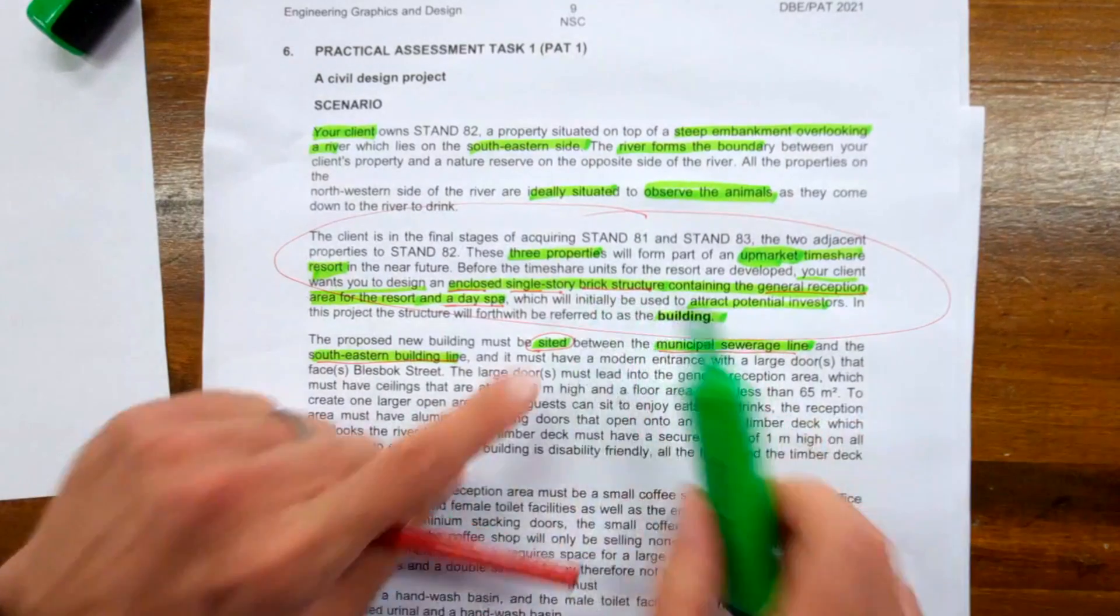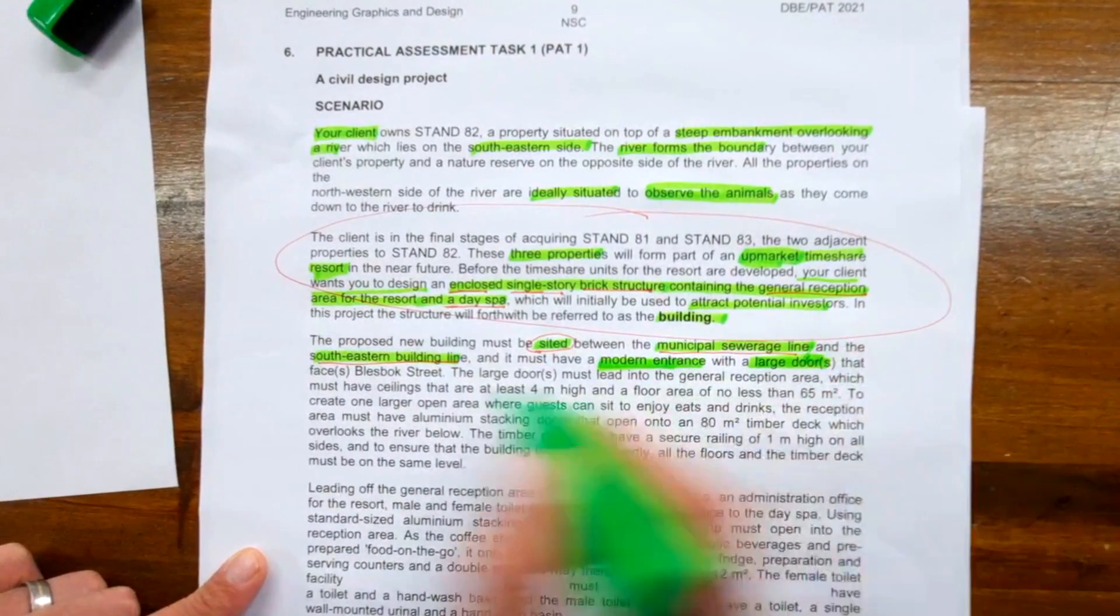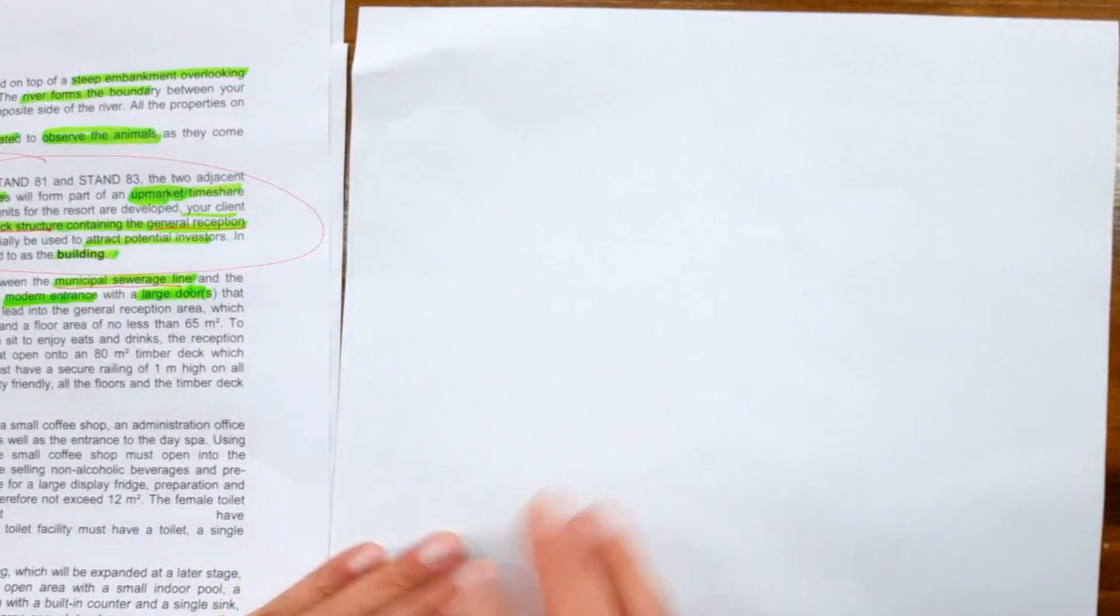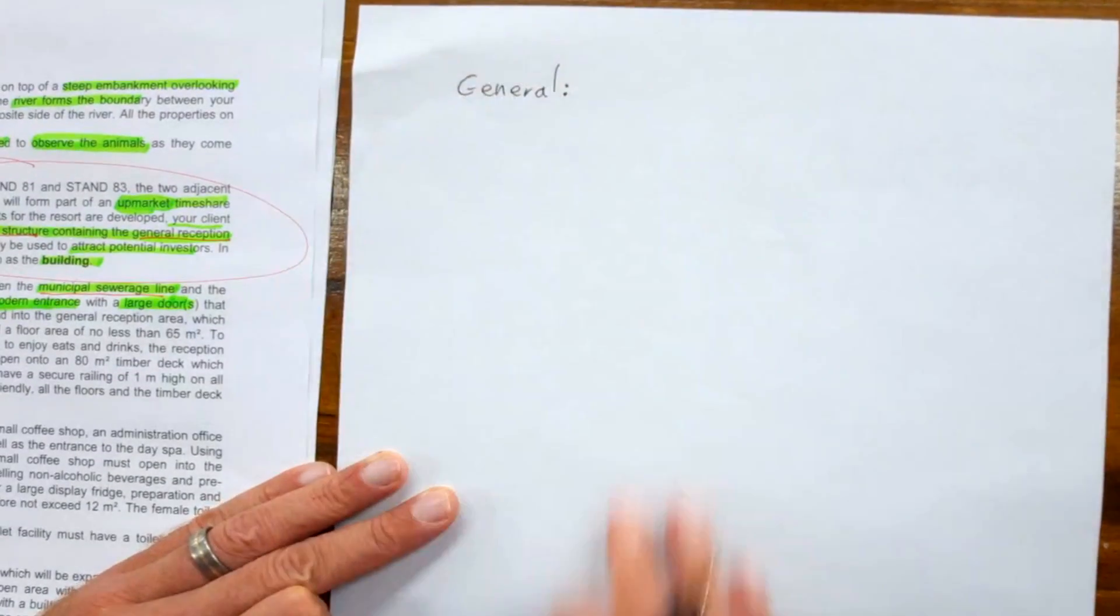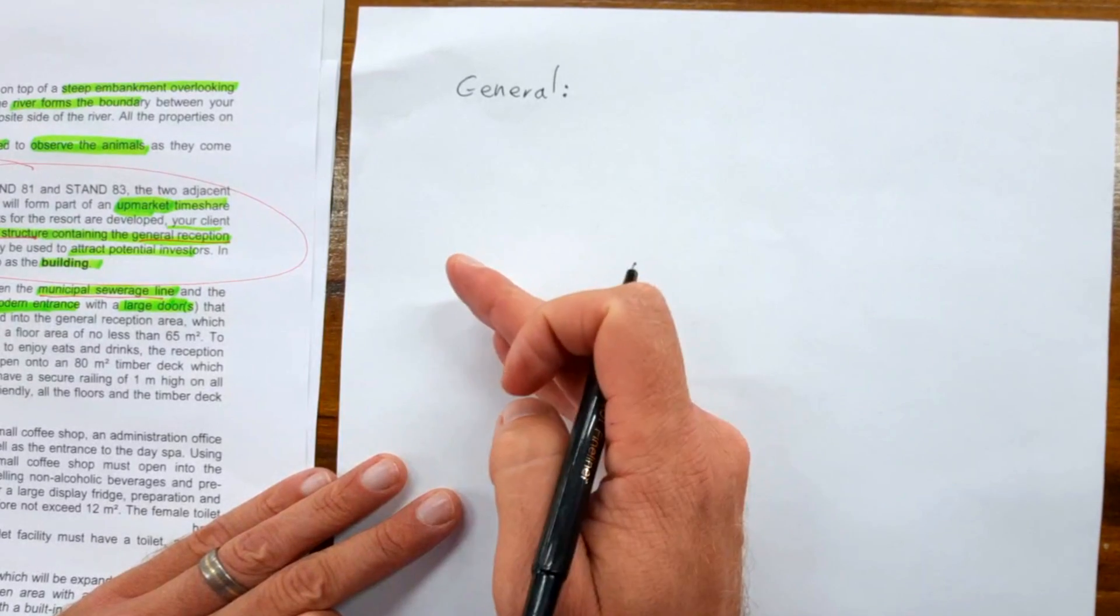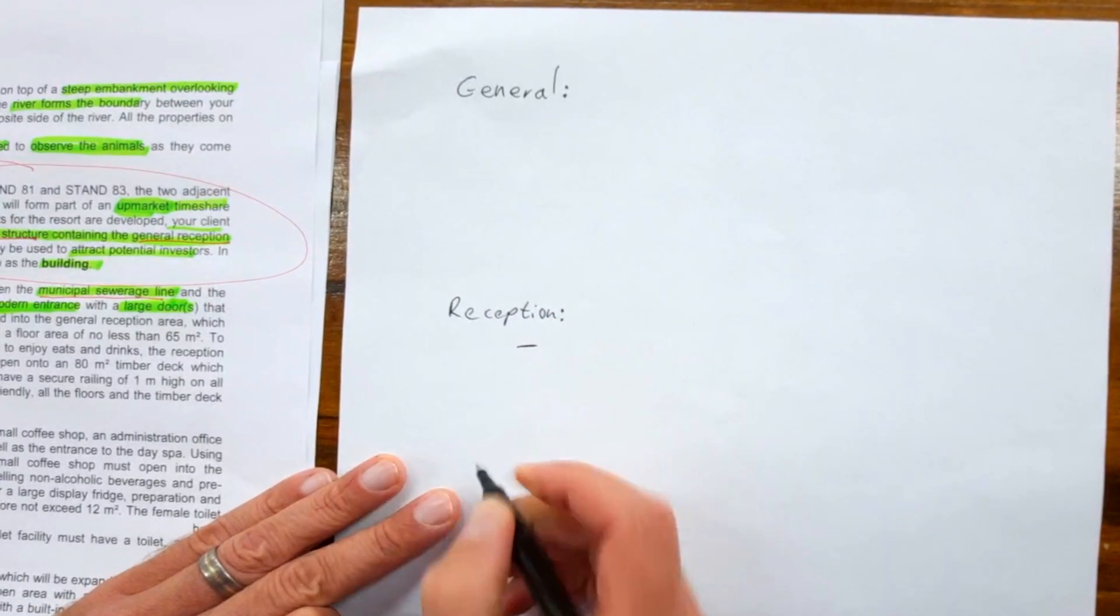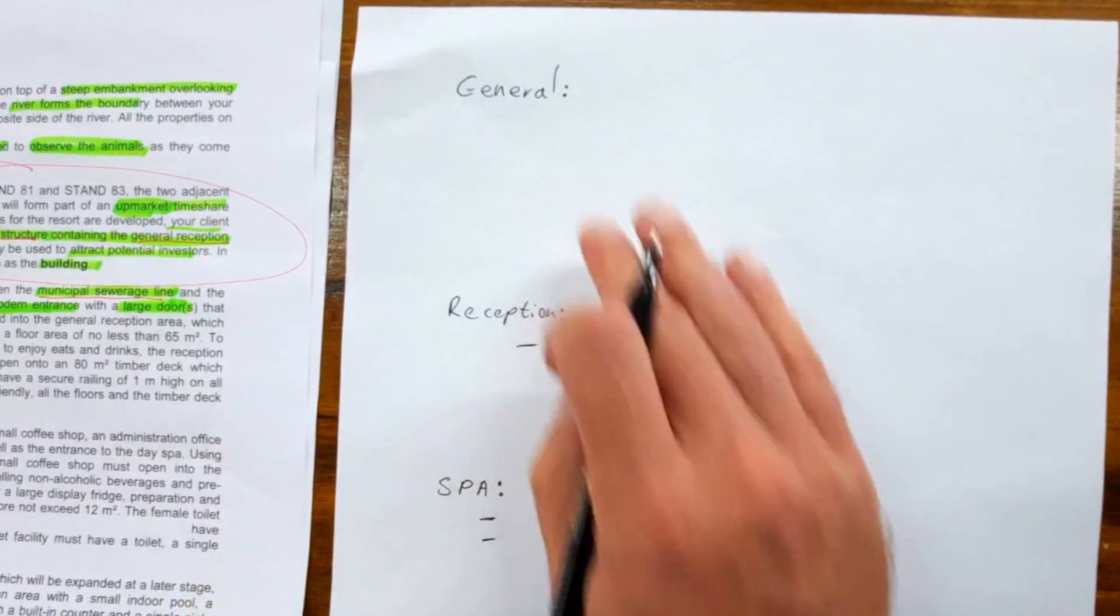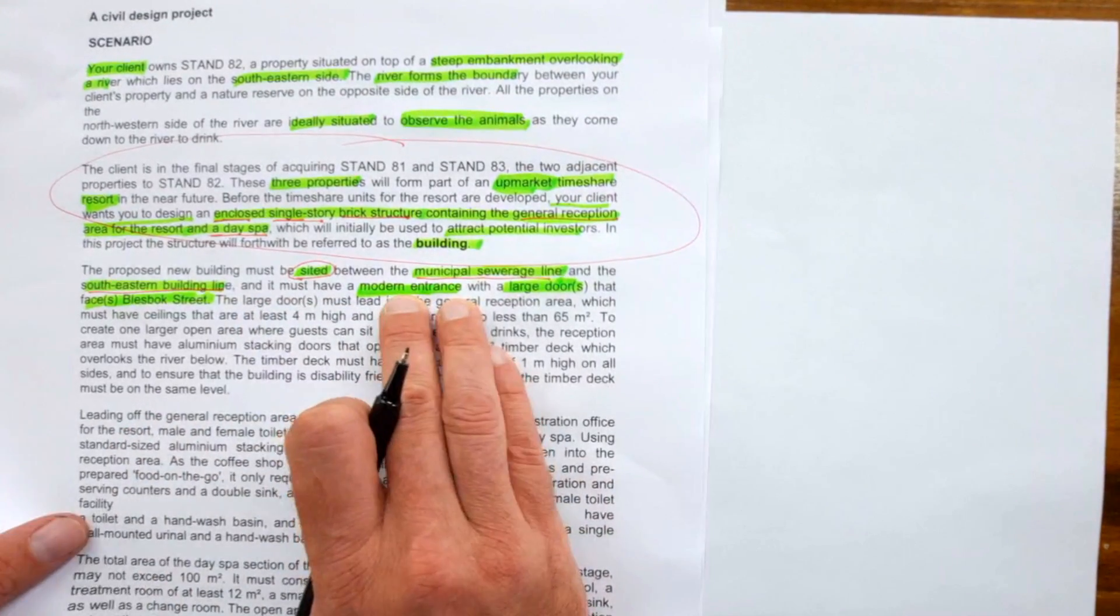The positioning is between the municipal and southeastern building line, and it must have a modern entrance with large doors facing Blaze Block Street. Let me show you why I'm highlighting this. On a separate page, split this up. Start by doing a rough draft of your specifications. You'll have general specifications applicable to the entire development, then subcategories like reception area and spa, each with its own specifications.